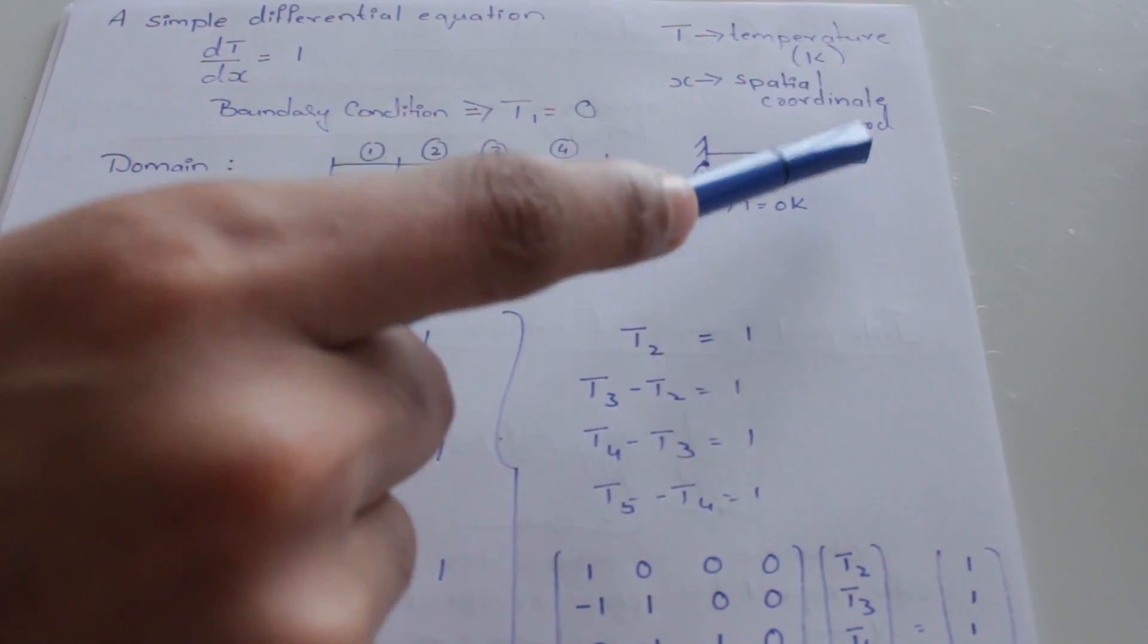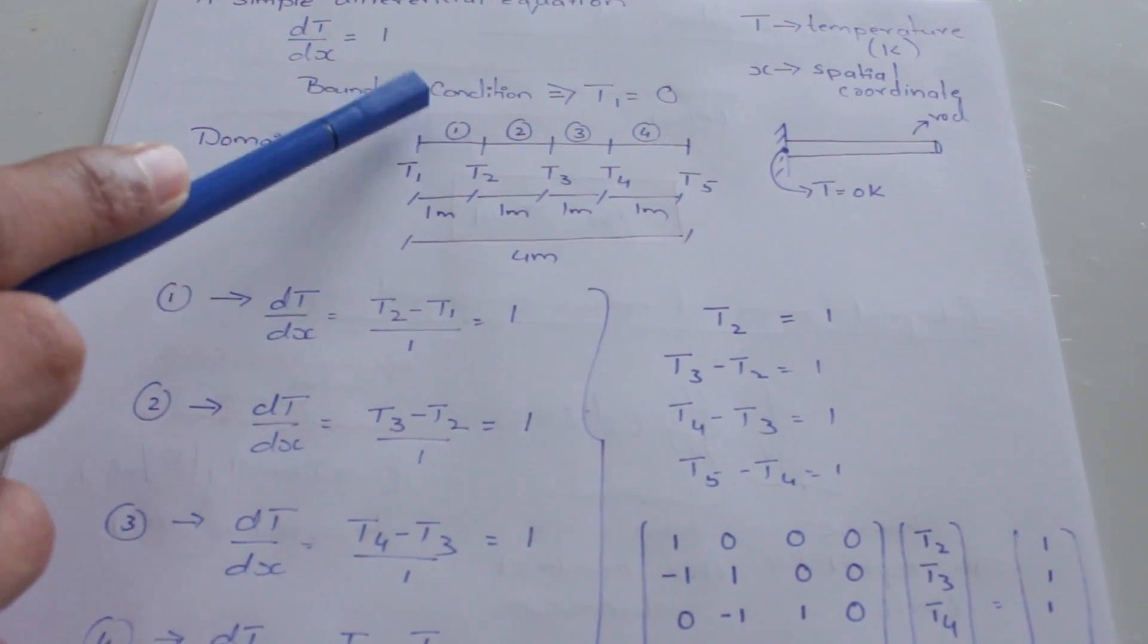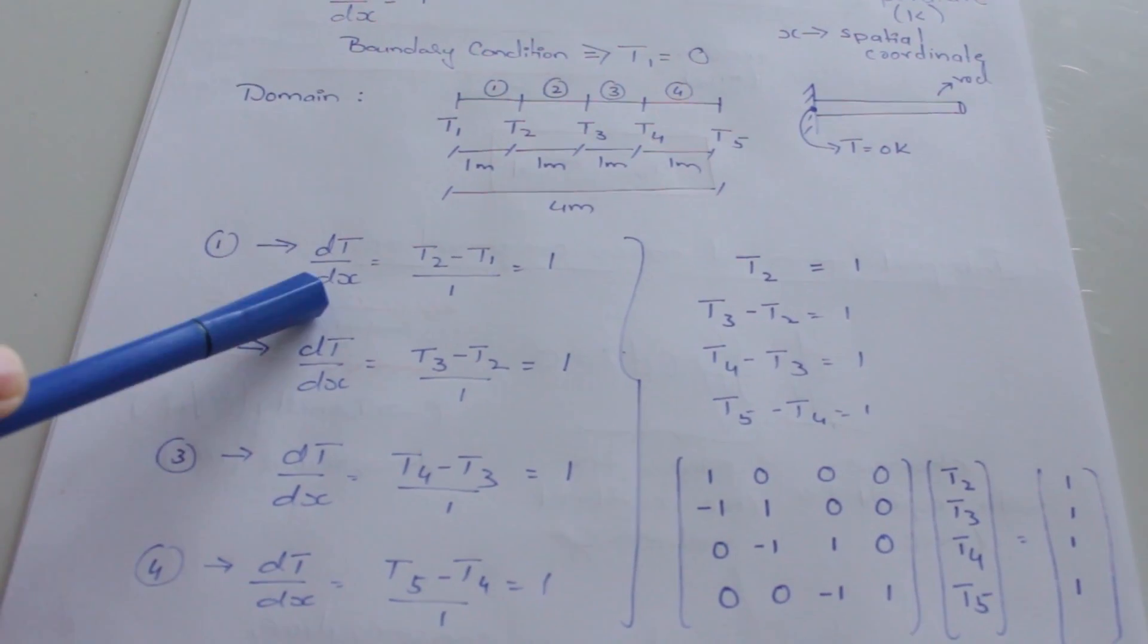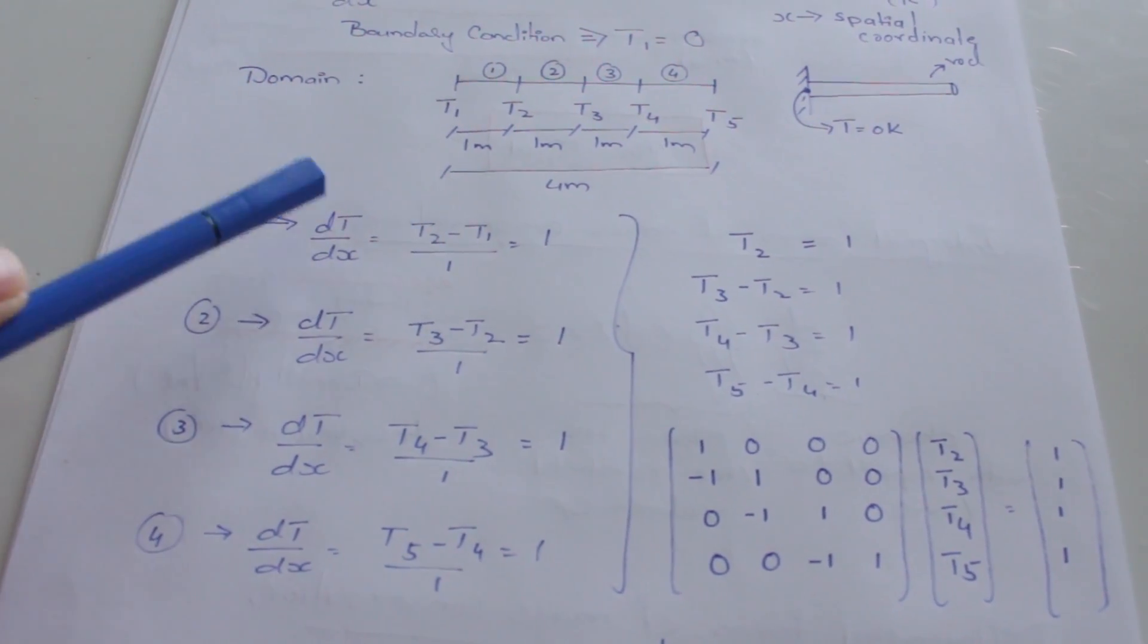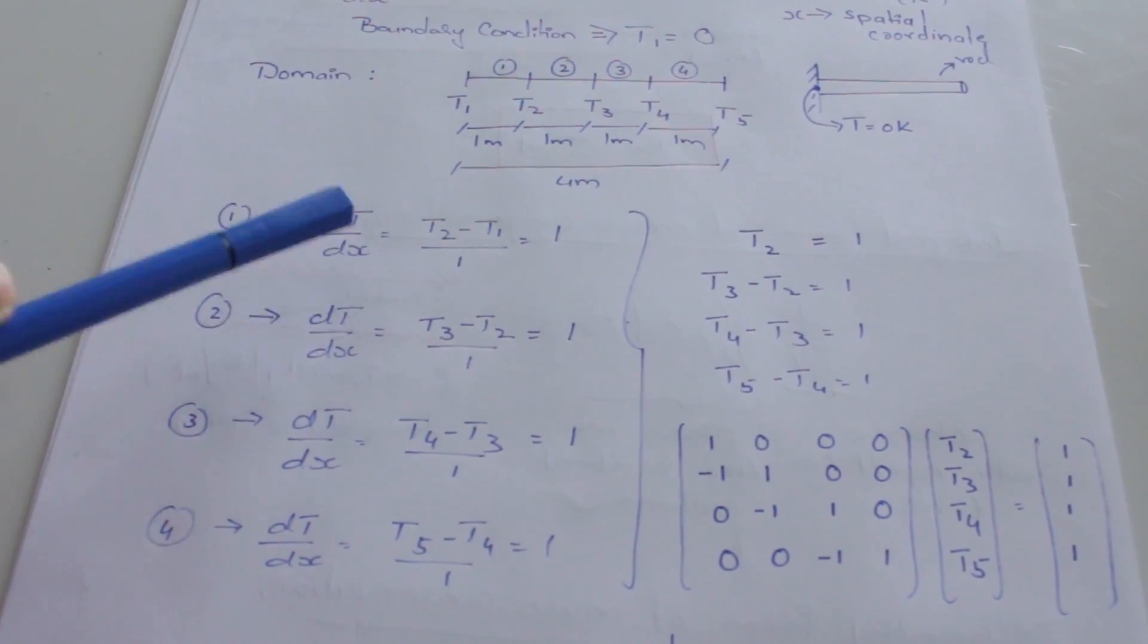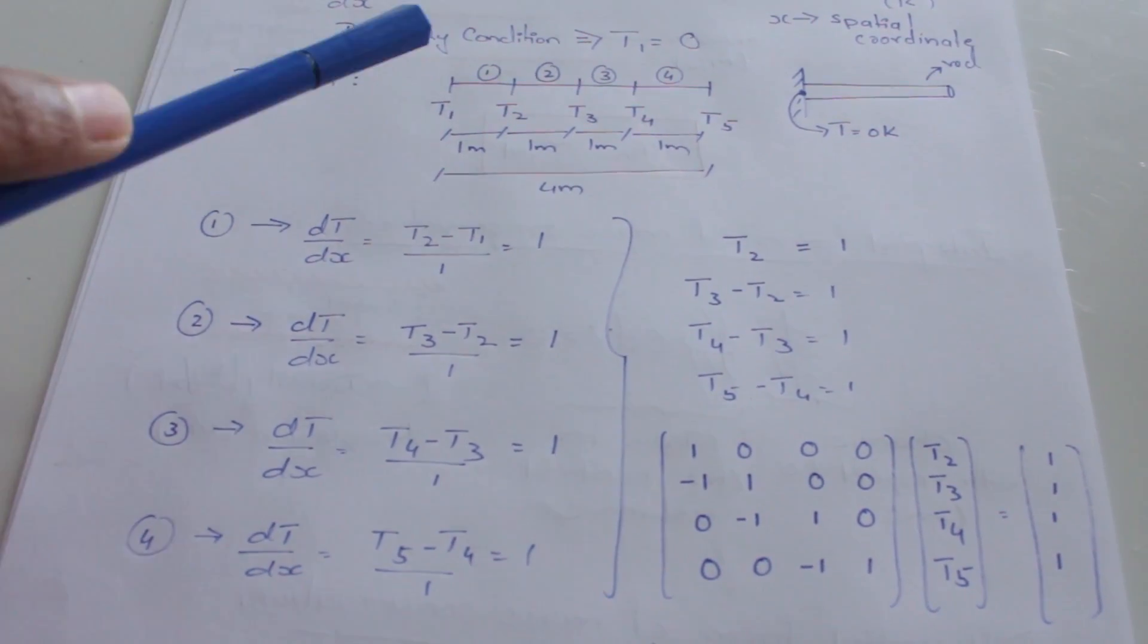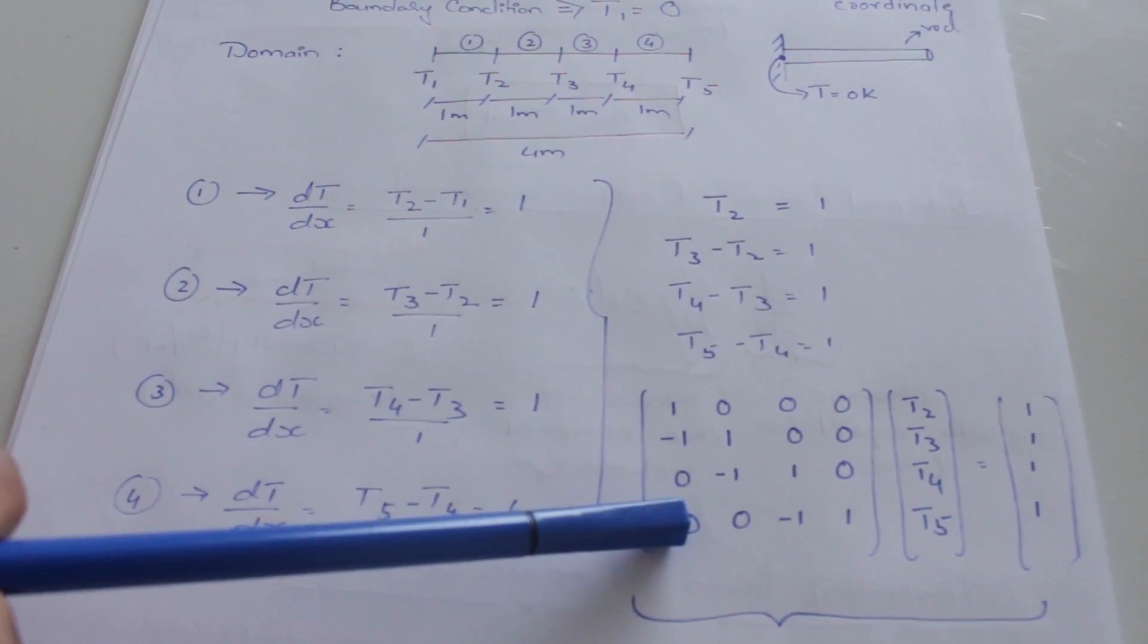To solve this problem, which is a continuous one, we discretize the rod into four different elements. Now, if we solve this equation for each of the elements, we can say that dT by dx, which is nothing but the change in temperature divided by the change in length. So dT is nothing but T2 minus T1 and dx is the gap between the two ends of the domain, which is 1 meter. If we write these equations for the four different elements, we end up getting a set of linear algebraic equations. Isn't that amazing? We just converted a differential equation into its linear algebraic form.